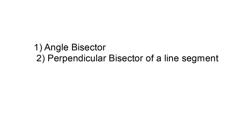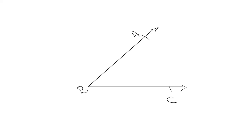So students, let's start. What is an Angle? We know that two rays join together to form an angle. The common point is called the Vertex of the Angle. Here is angle ABC — B is the Vertex of the Angle, and BA and BC are the Arms or Sides of the Angle.